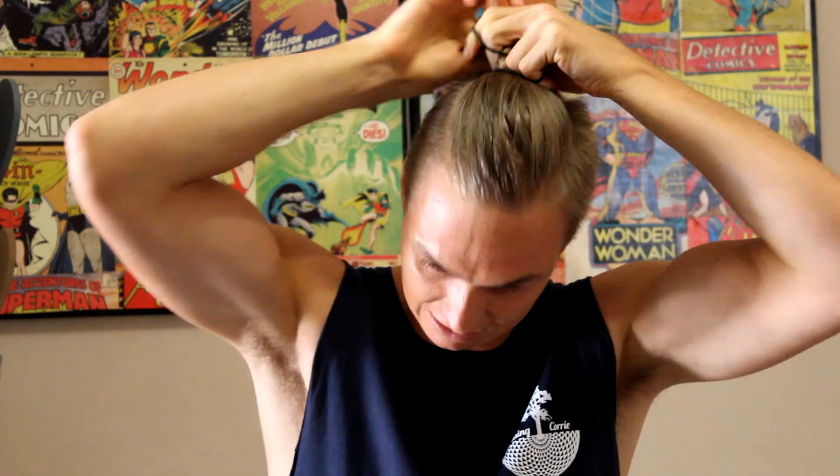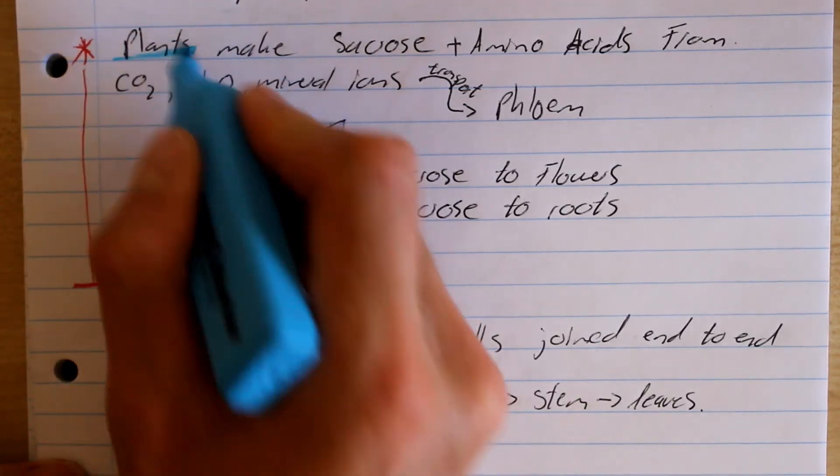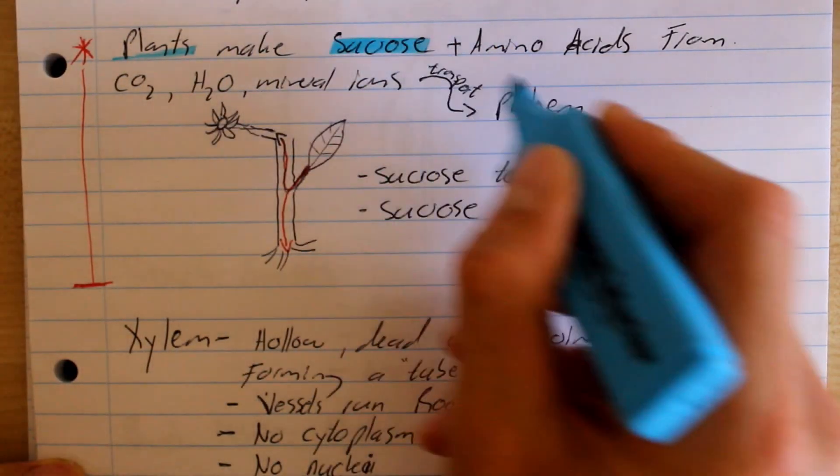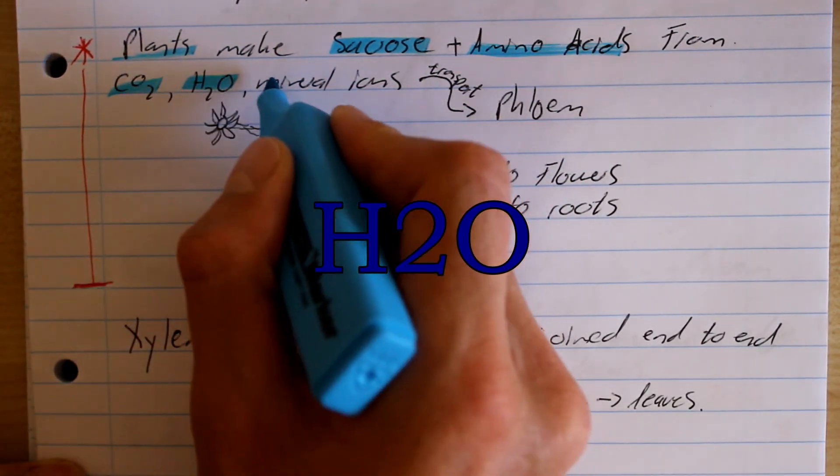Hi, it's so nice to see all of your smiles today. We are talking about chapter 8, which is transport in plants. We know that plants need carbon dioxide, water, and mineral ions, and they get these from their environment. Plants actually make their own sucrose and amino acids by using carbon dioxide, water, and mineral ions.